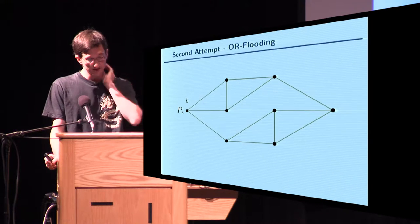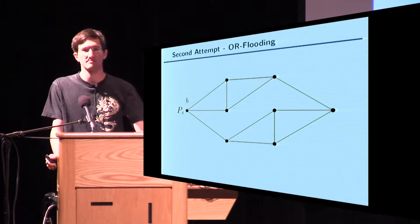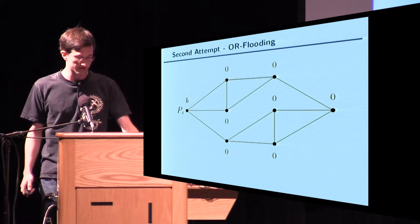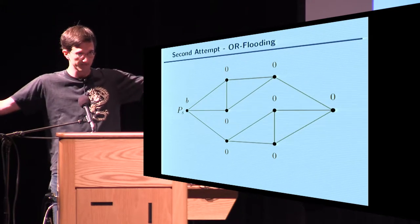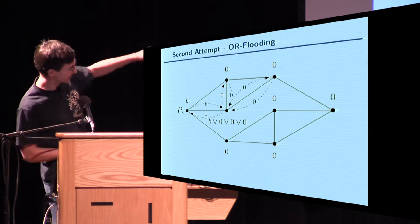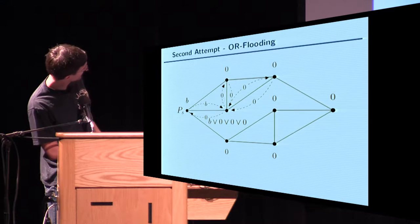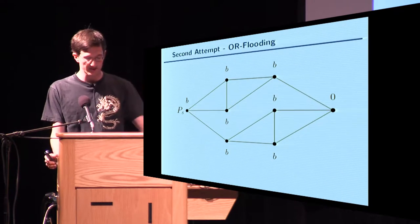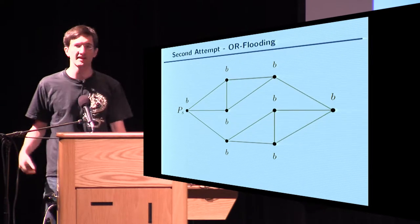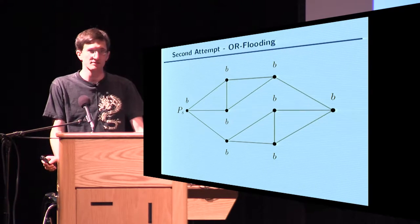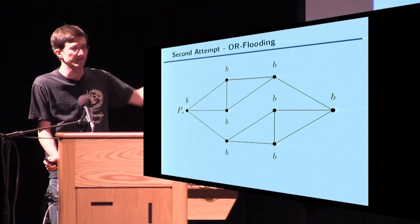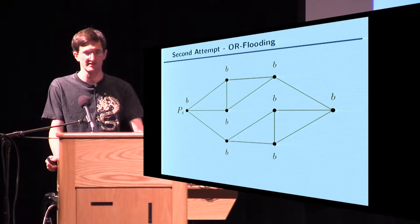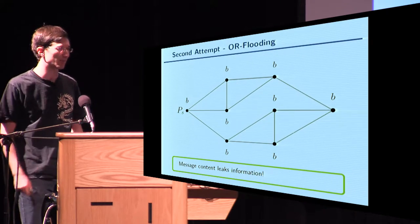Can we do better? Yes, simply by using OR flooding. In this case, everyone has a bit: the sender has its real bit B, and all others have input bit zero. In each round, you send your current bit to all your neighbors and compute the OR of the received bits. After enough rounds, everyone has the bit of the sender — we compute the OR of all input bits. However, this is also not topology hiding: if the sender has input one, you can do the same timing attack as before, counting rounds until you first see a one. So not only the message pattern but also the message content leaks information about the topology. That's where we can use encryption.